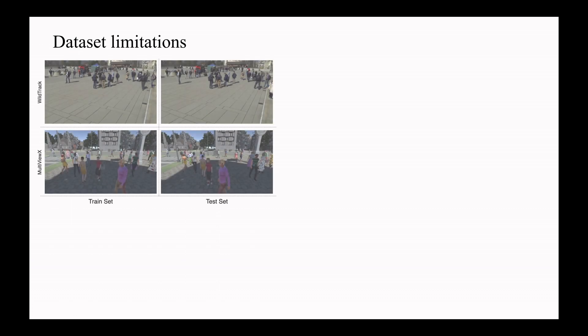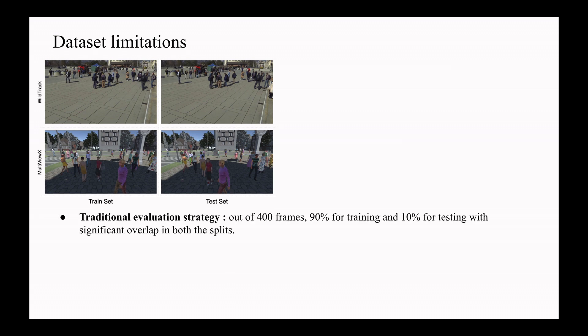The previous models are evaluated and benchmarked on two publicly available datasets. One is WildTrack, which is a real dataset, and the other is MultiviewX, which is a synthetic dataset. These datasets have only one scene with the same camera configuration and daytime setting. They have a total of 400 frames of which 90% is used for training and remaining 10% for testing. There is significant overlap between train and test split, and there are many static pedestrians which results in model overfitting.